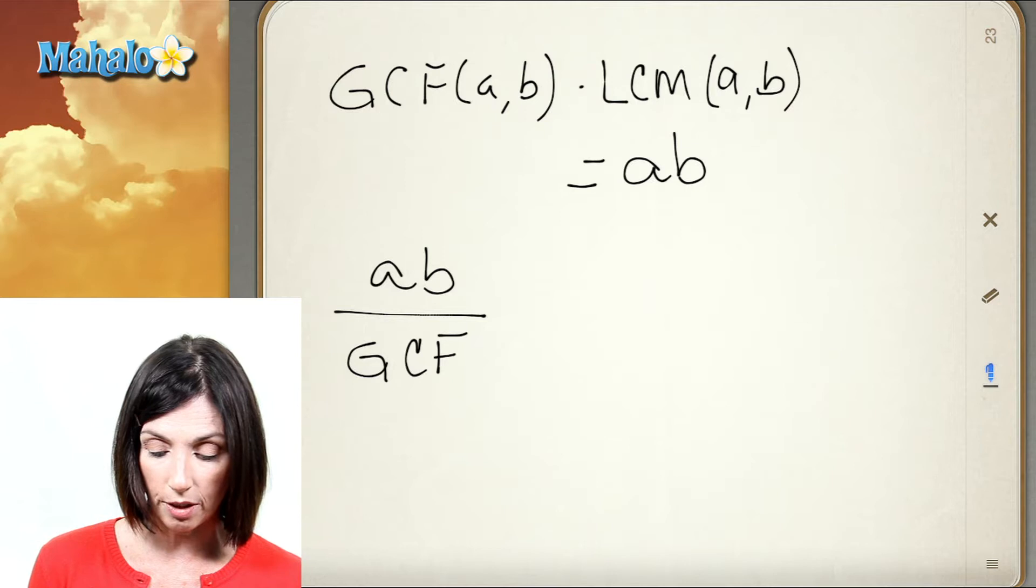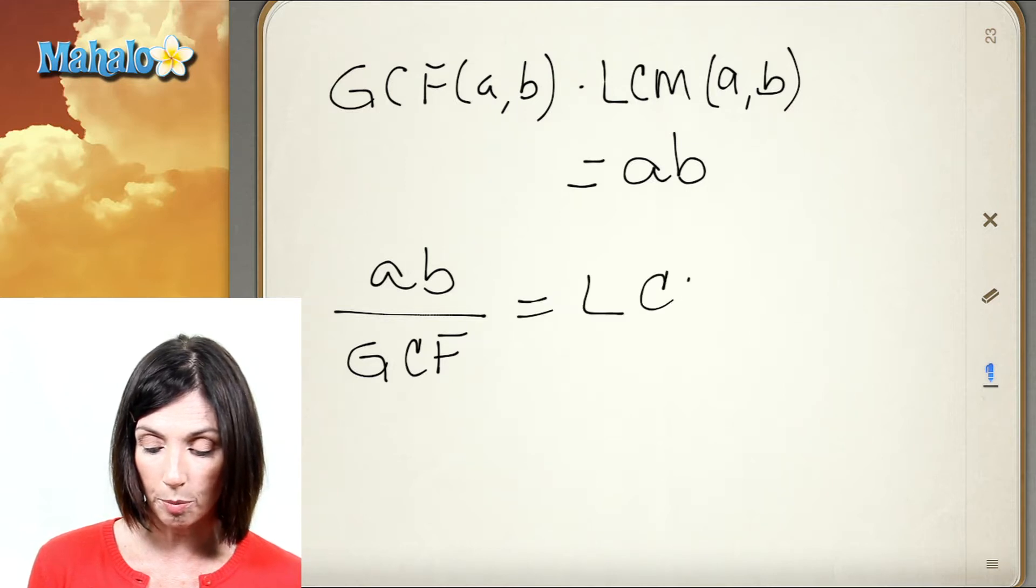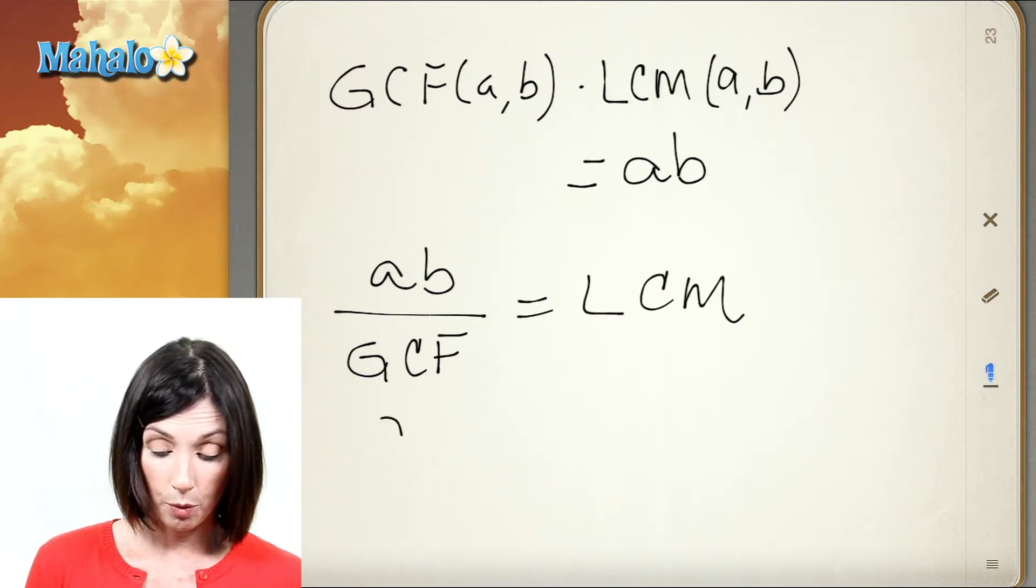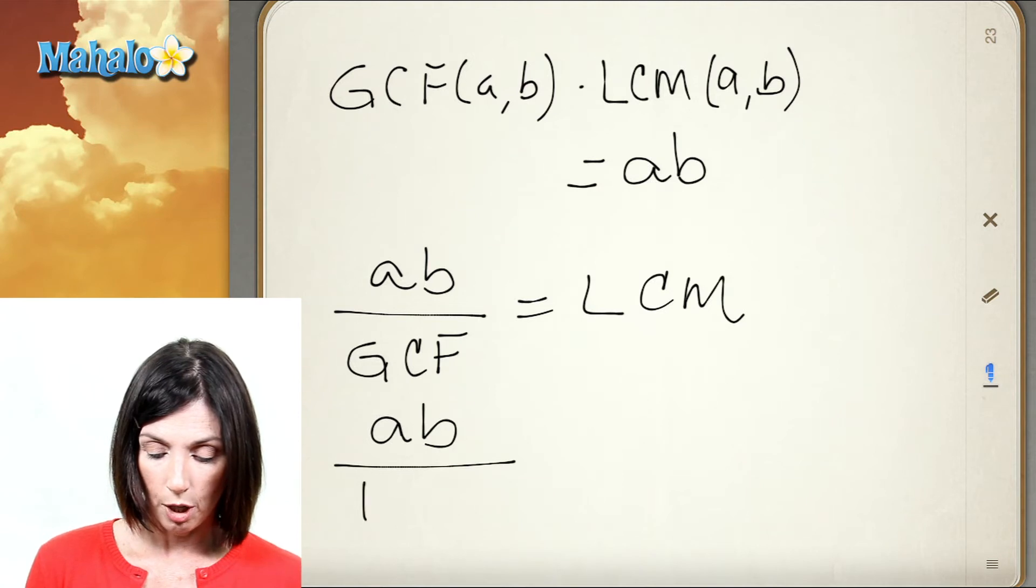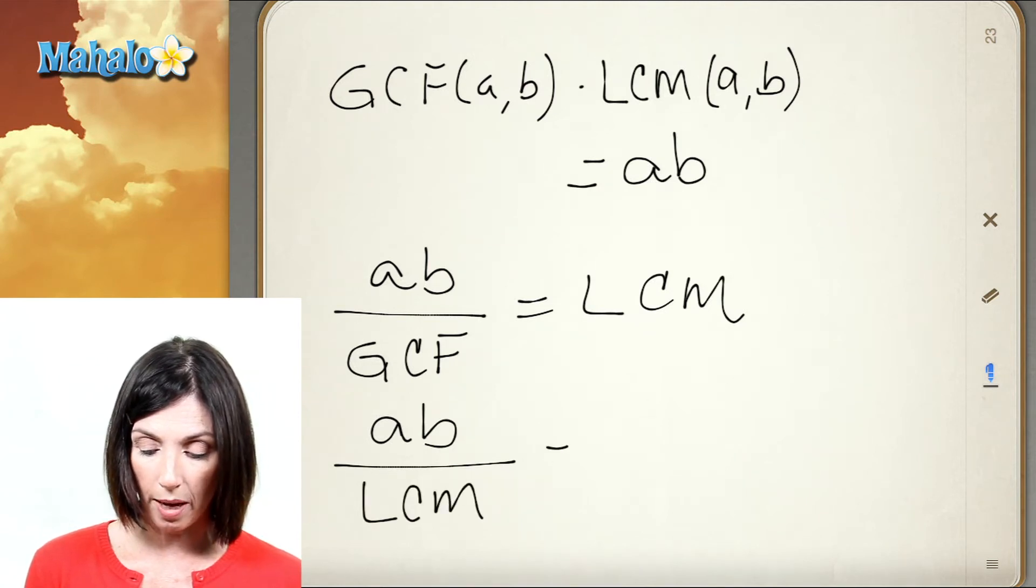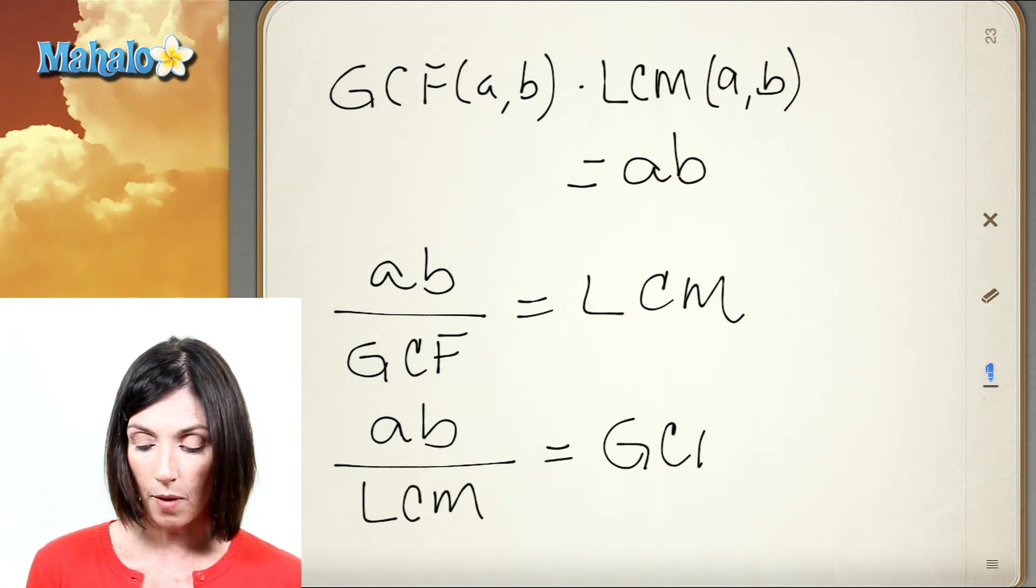Or if you know the least common multiple, you can divide the product of the two numbers by that and get the greatest common factor.